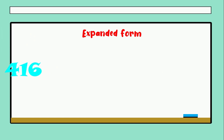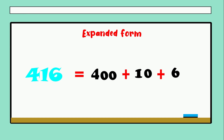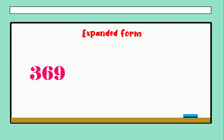The next example: 416 equals 6 plus — one ten, so one zero — plus four hundreds, so two zeros. 416 equals 400 plus 10 plus 6. Very good. The next number: 369 equals 9 plus — six tens, one zero — plus three hundreds, two zeros.